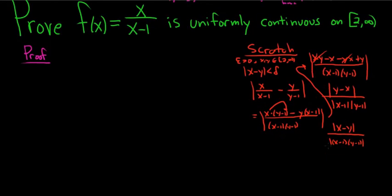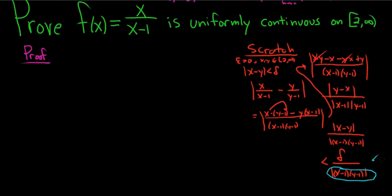We're almost stuck here. At this point we know that the numerator is less than delta, and then we have this bottom piece — x minus 1 times y minus 1. We're stuck because we have this bottom term. We want this to be less than epsilon, but we need to bound the denominator from below. Here's where you have to go back and think about this. x and y are in the set 2 to infinity.